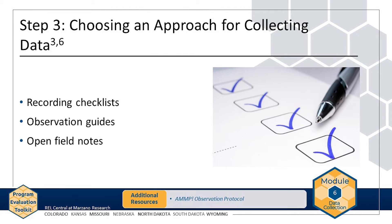In the AMP example, the evaluation team wants to answer the question: What barriers exist that prevent AMP participants from completing homework? The team wants to observe specific students' behaviors or comments that might indicate barriers, as well as the tutor's responses during AMP, so the team creates an observation guide. The team also creates a recording checklist to check off observed behaviors such as missing supplies and distracted by peers. Refer to the AMP observation protocol handout on the Resources page of the website to review this example.